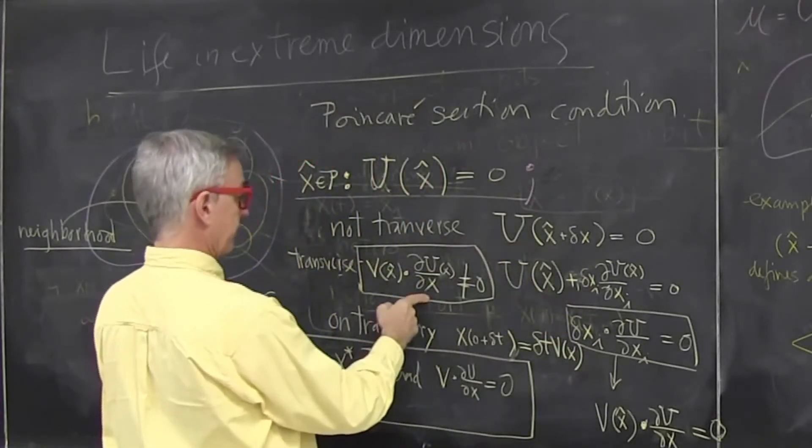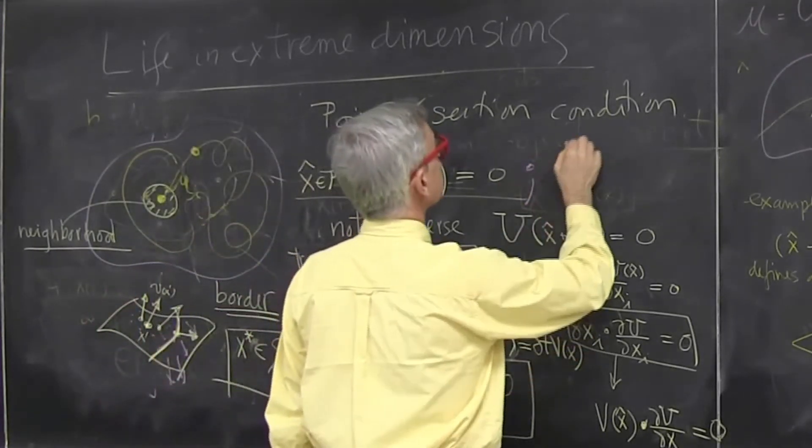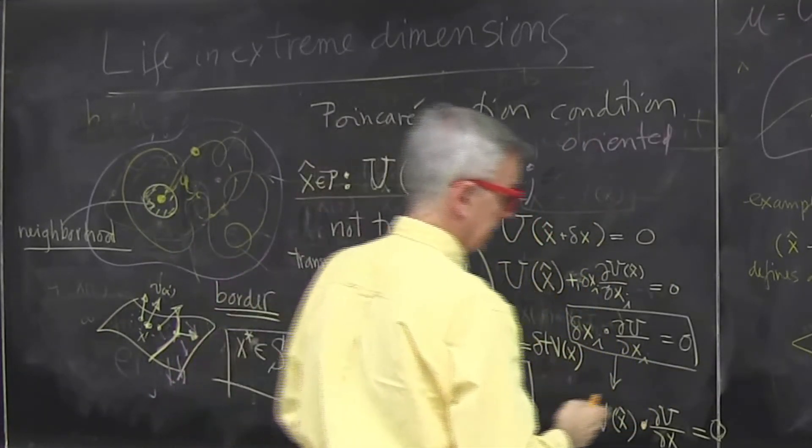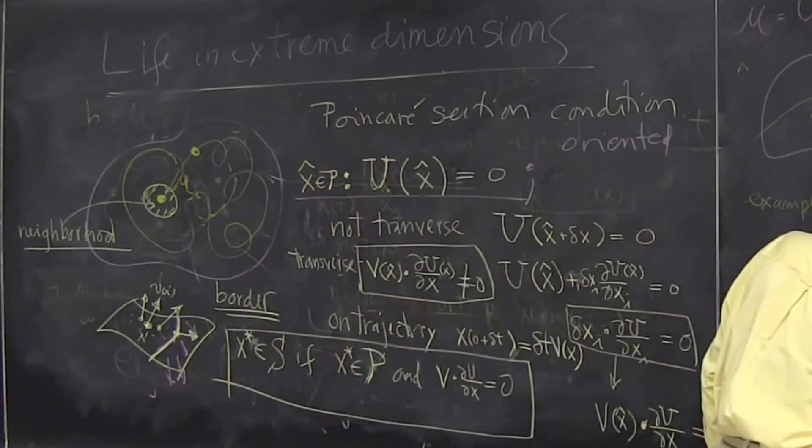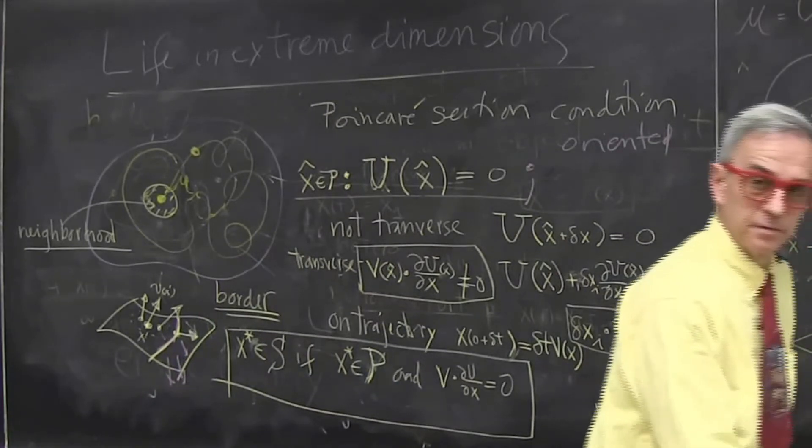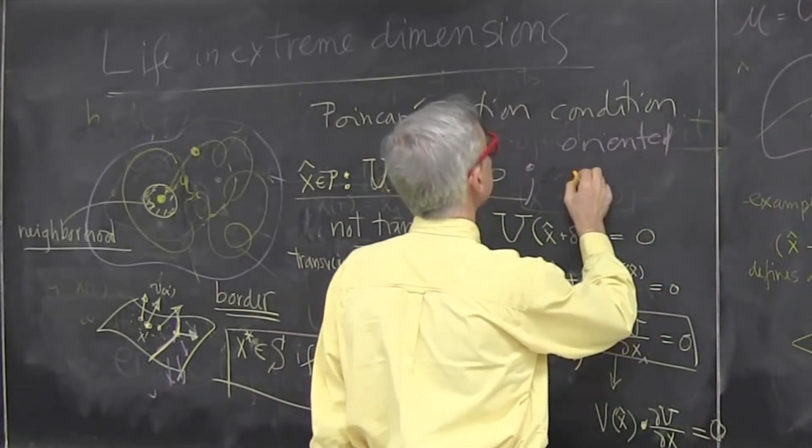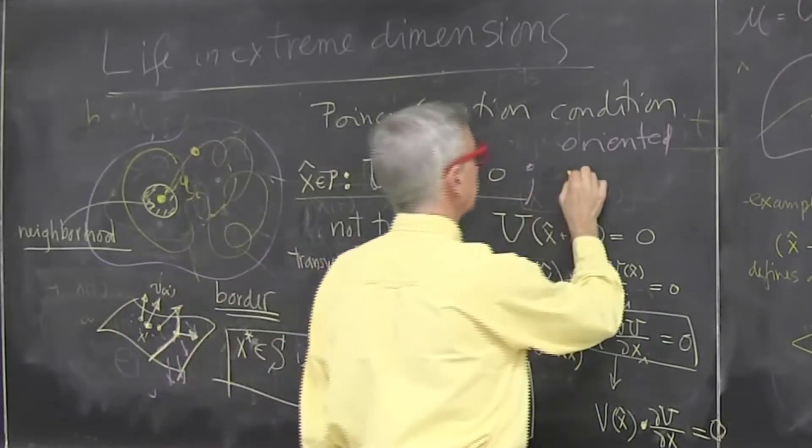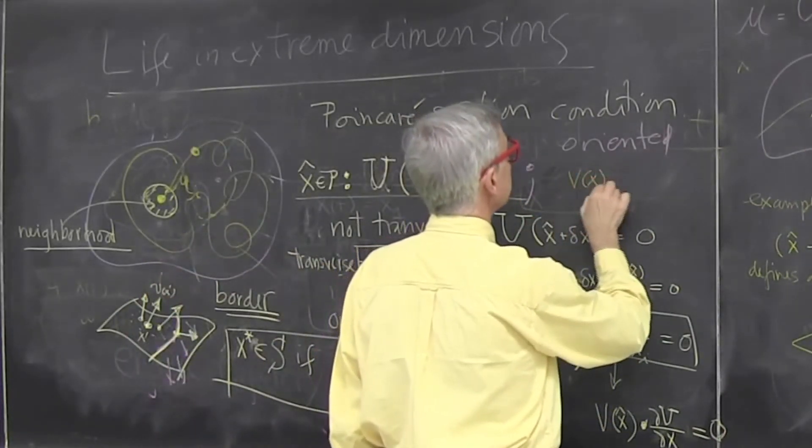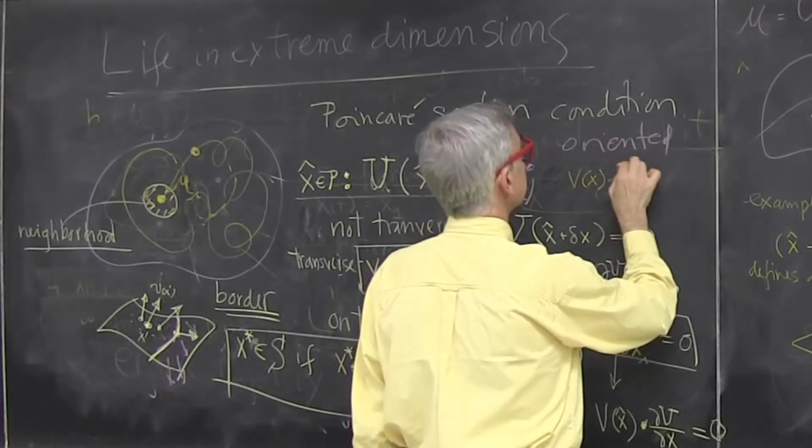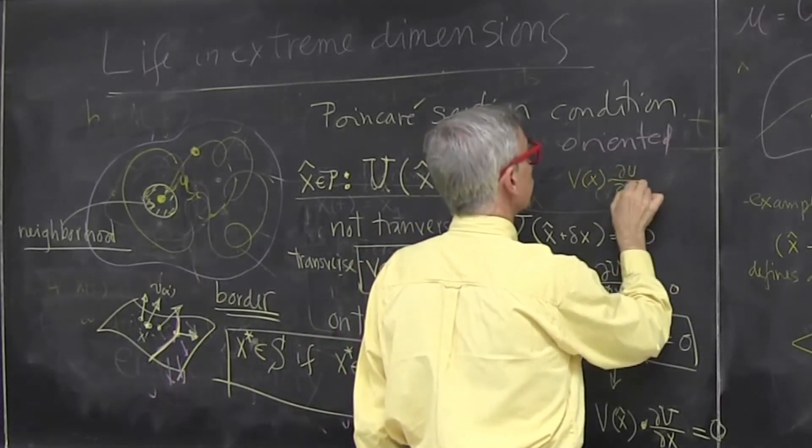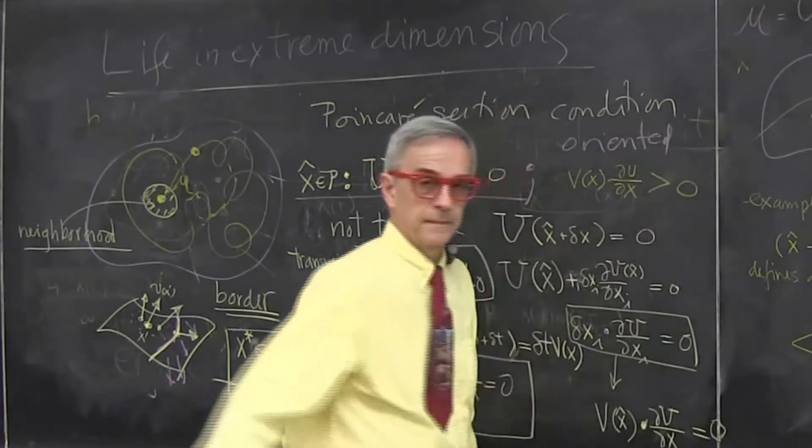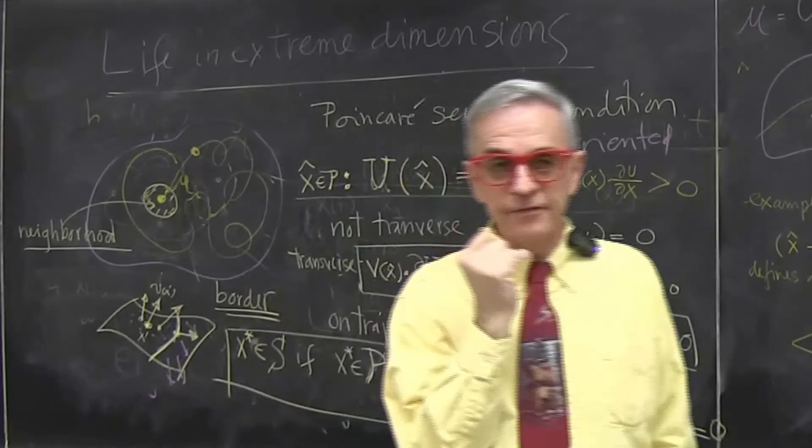So it should be oriented. So it should be transverse and oriented. And by oriented, I mean that the dot product is the same sign for everybody in the neighborhood. I'll take it to be positive, meaning that not only that's transverse, which means it's not equal to zero, but I want it to be v of x times the orientation of my section should be strictly positive.